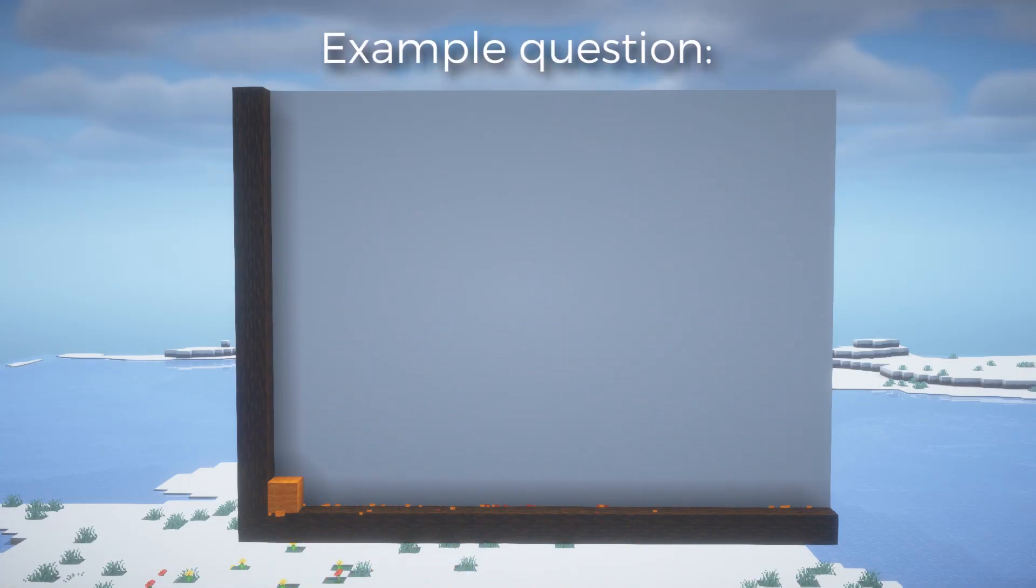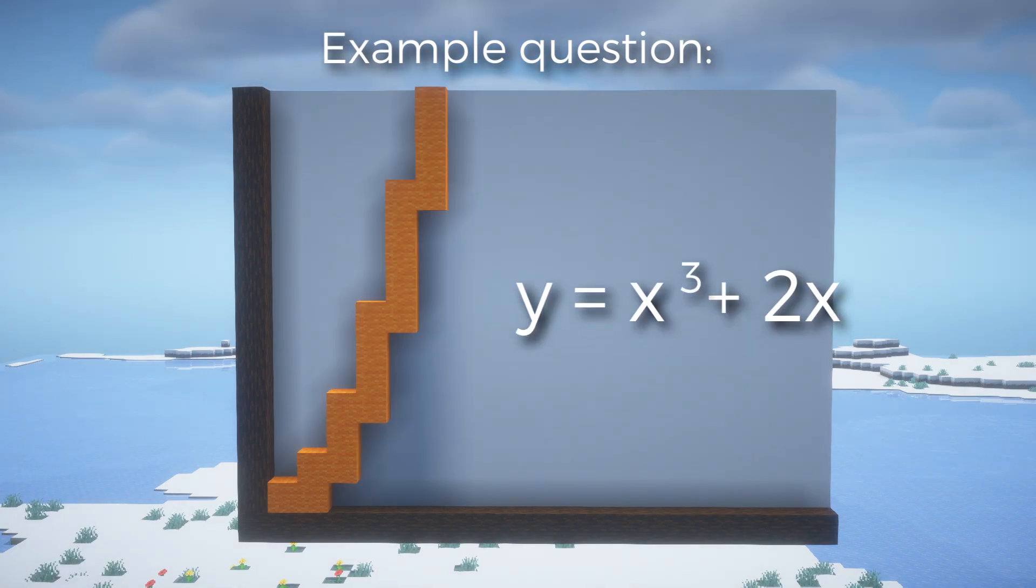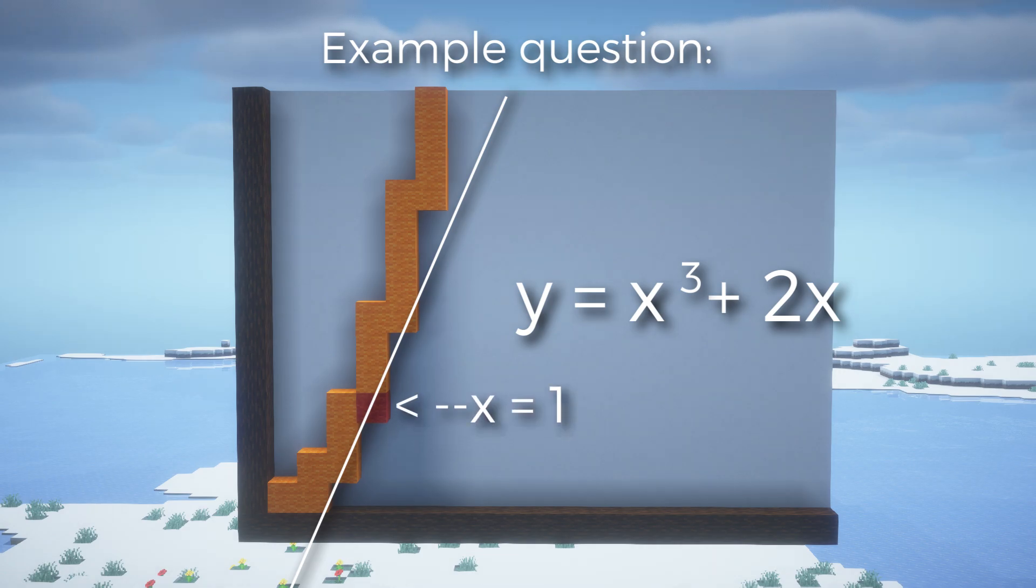For an example question, let's say that a curve with the equation y equals x cubed plus 2x has a tangent line located at x equals 1. The question is, what is the equation of the tangent line?